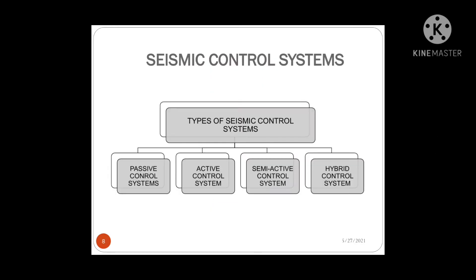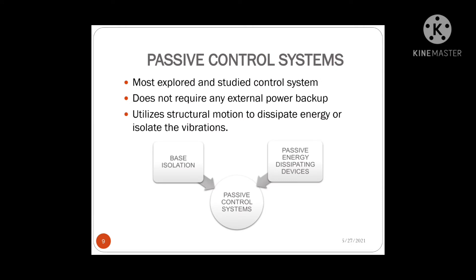In the next slide, we can see a flow chart showing the types of seismic control systems. Seismic control systems refer to those modern techniques in earthquake resistant design that prevent or divert a major portion of earthquake energy from entering into the main structural system. Basically there are four types: passive, active, semi-active and hybrid control systems. A passive control system consists of one or more devices attached or embedded to a structure, designed to modify the stiffness or damping without requiring an external power source, developing control forces opposite to the motion of the structural system.